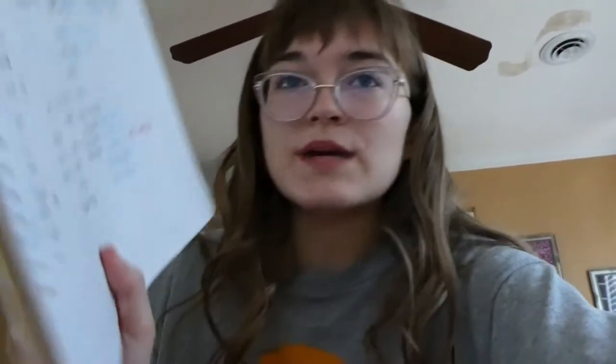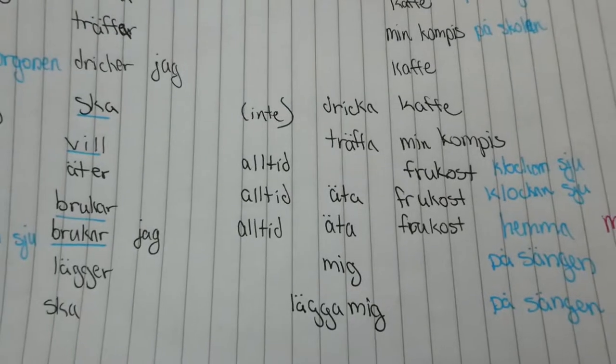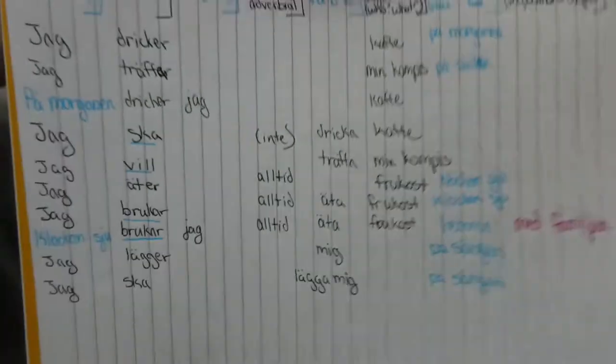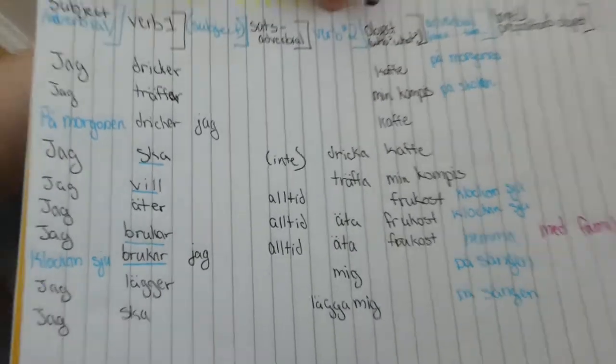When you need a helper verb — which takes me back to eighth grade — the helper verb goes in verb one's location, as you guys can see I underlined them. And then the actual verb goes in verb two's location. That is so stinking cool.